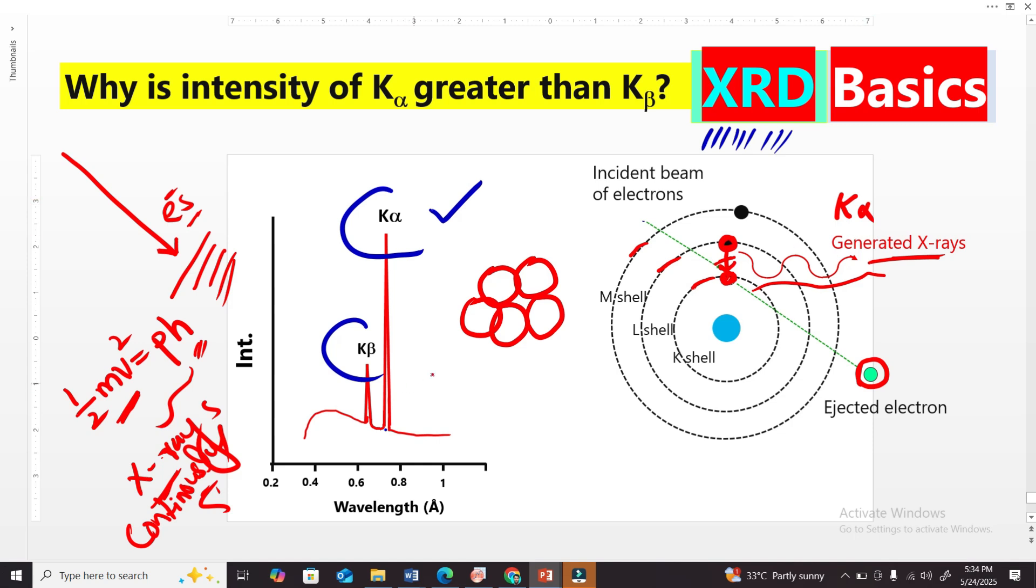Now look, there is also a probability that this vacancy can be filled by M-shell electrons. But this probability is very, very less, because common sense says that this shell is closer to this vacancy.